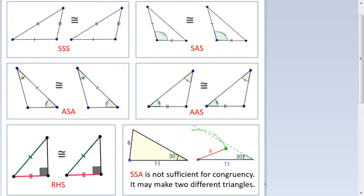For congruency, there are only these five tests: SAS, SSS, SAS, ASA, AS, and RHS. These are the only five tests.